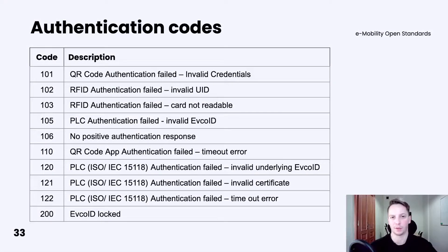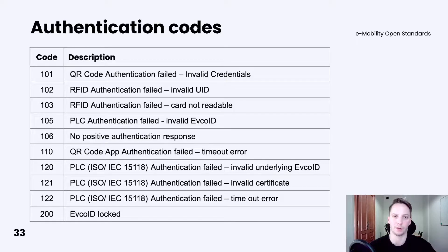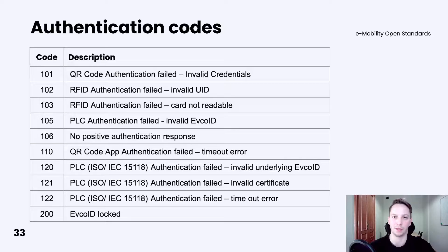The next type of status codes is authentication ones, where we can specify more details regarding authentication-related errors. For example, we may specify invalid credentials for QR code, invalid UID or card not readable for RFID, invalid FCO ID for PLC, no positive authentication response, timeout error on QR code authentication, invalid underlying FCO ID, invalid certificate or timeout error on PLC, or that the FCO ID was blocked.